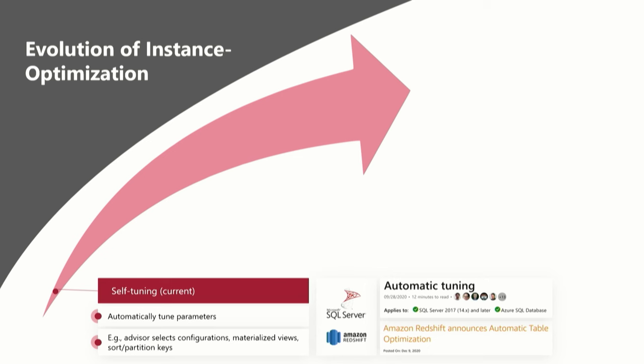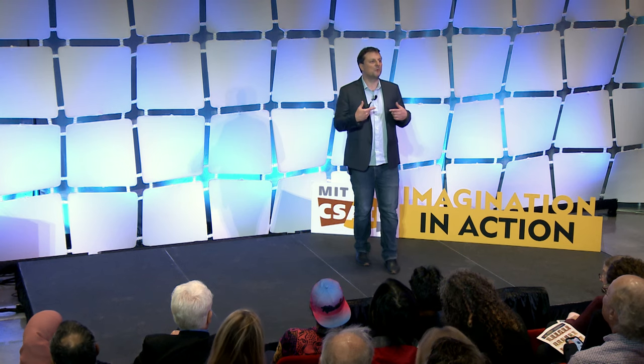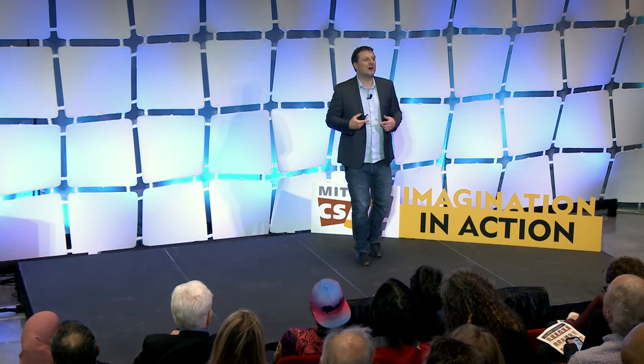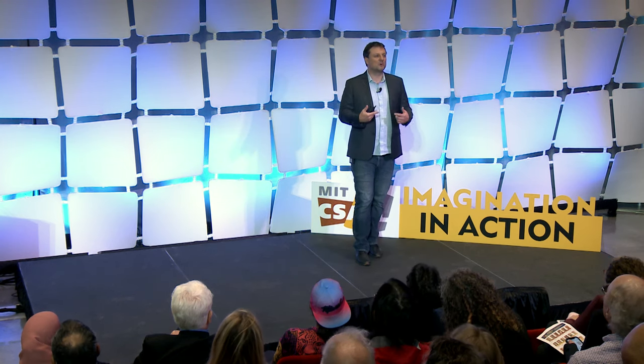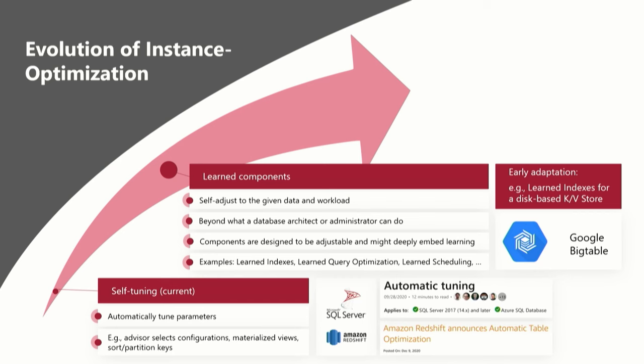For example, databases have a buffer manager, and you adjust the buffer size depending on the workload, which is a form of optimizing it for that workload. However, we want to go beyond that and look into how we can build learned components which embed machine learning much more deeply to get much better specialization. We call it instance optimization. These are techniques now just coming to market and slowly being integrated.